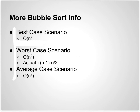And now for more Bubble Sort info. In our best case scenario, where the list is already sorted, we have a Big O of n. In our worst case scenario, Bubble Sort has a Big O of n squared, with an actual of (n-1) * n / 2. And in our average case scenario, Bubble Sort has a Big O of n squared.